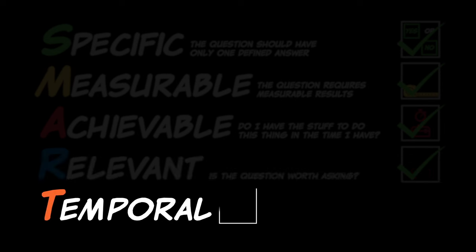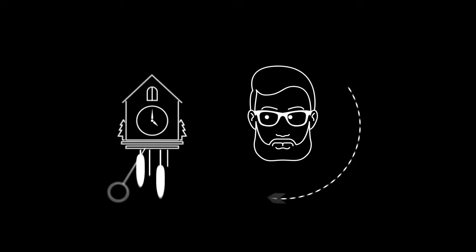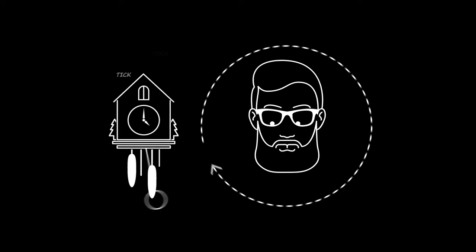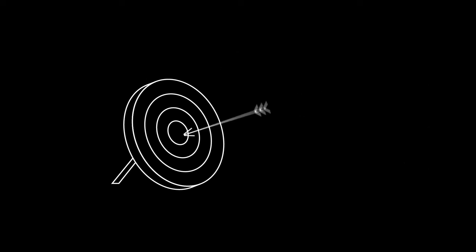T: Temporal. The question should be grounded in time. The infection process they study takes place over three to four days, so experiments won't run for weeks at a time. They may be interested in questions within the first 24 hours. You can't do an experiment that never ends — that's why your testable question has to have a time component. Temporal — check. Now, finally, we have arrived at our big testable question.